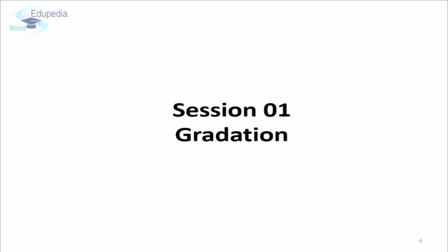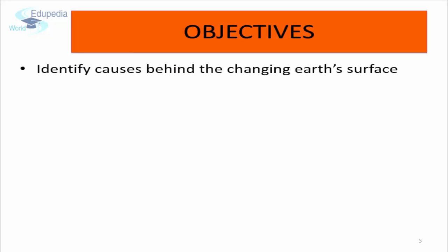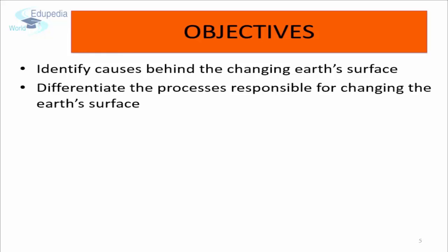This is the first session of the chapter. In this session, we are going to learn in detail about weathering. We are going to try and achieve the following objectives: identify causes behind the changing earth surface, and differentiate the processes responsible for changing the earth surface.